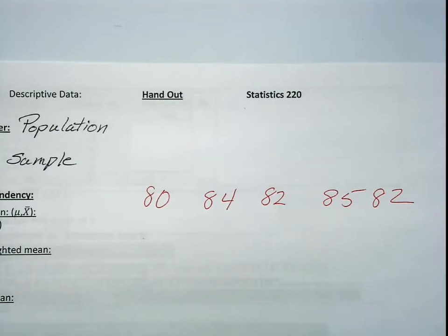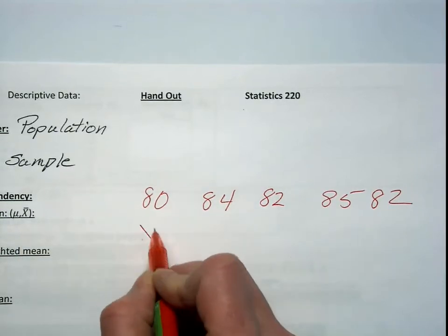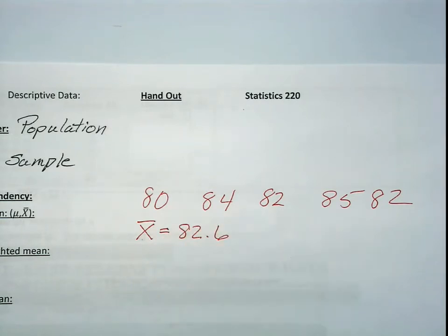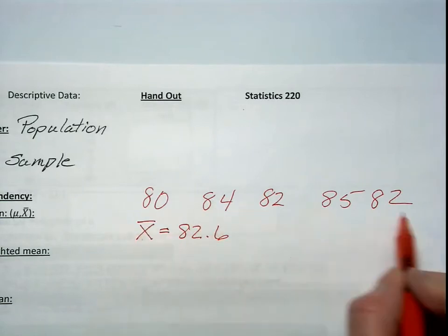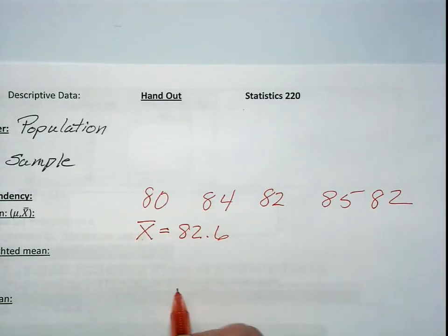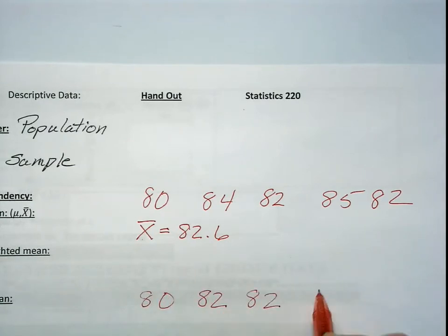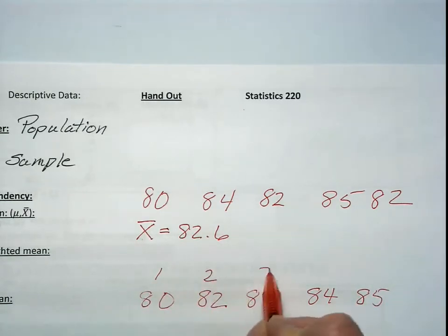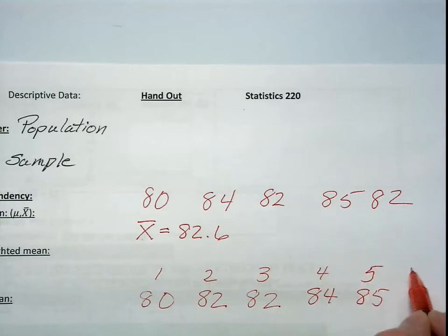When you input these five data points, the mean of my sample is 82.6. The median, how do we calculate the median? We take these five data points and arrange them from least to greatest, and it's a good habit to write the locator points above it.